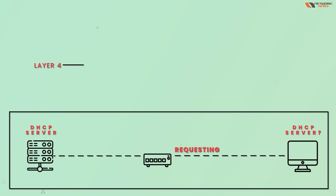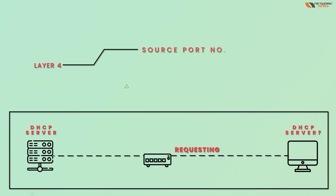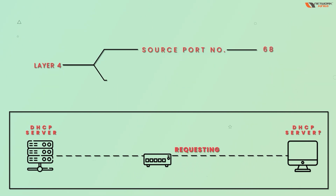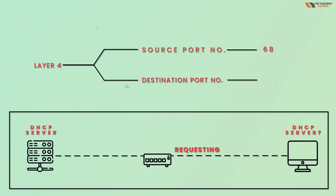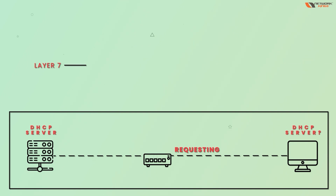At Layer 4, the source port number will be 68 (the client port) and the destination port number will be 67 (the server port). At Layer 7 there will be a DHCP header.